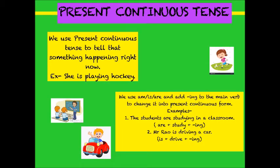Now, the next one is present continuous tense. We use present continuous tense to tell that something is happening right now. For example, she is playing hockey. We use am, is, or are and add ING to the main verb to change it into present continuous form. For example, the students are studying in a classroom — here are is a helping verb and study plus ING becomes studying. Mr. Rao is driving a car — here is is a helping verb and drive plus ING becomes driving. So in this way we form present continuous tense.